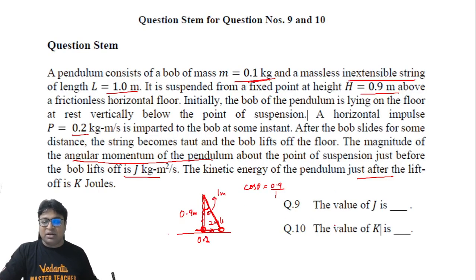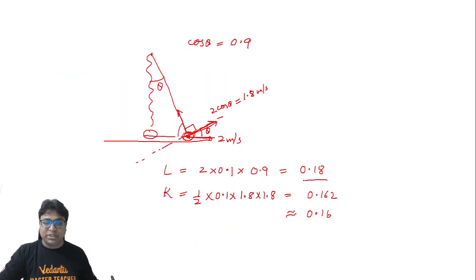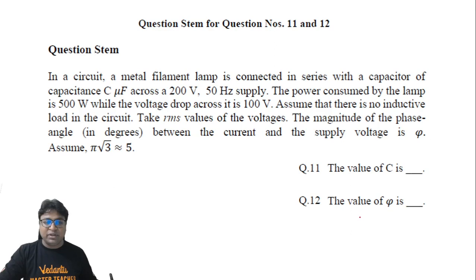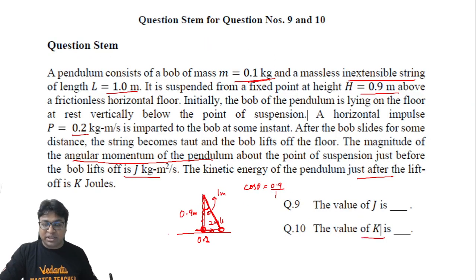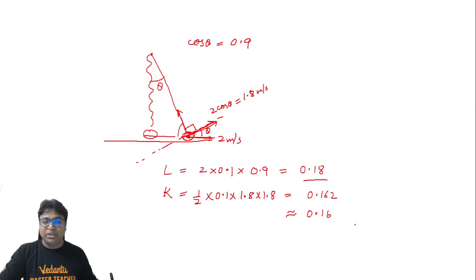Going back, the value of J, that's the angular momentum, would be 0.18 and the value of K would be 0.16.